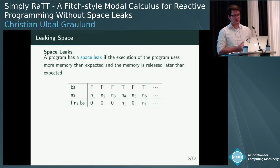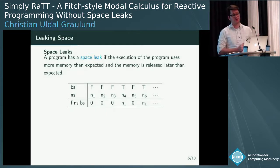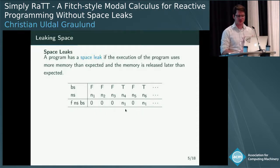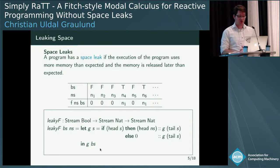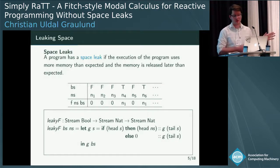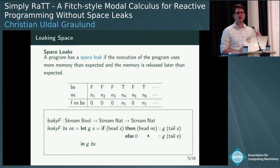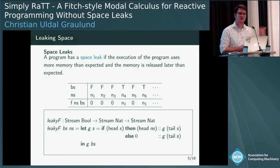As an example: a program that takes a stream of booleans and a stream of natural numbers. If the boolean is false, return zero; if true, return the head of the natural number stream. Crucially, it returns the head in both cases and doesn't care about the tail. One implementation recurses only on the boolean, but unless you have a very eager evaluation strategy, the call to head won't happen until you actually get true. So you carry along the full natural number stream, buffering it indefinitely — which may cause a space leak.